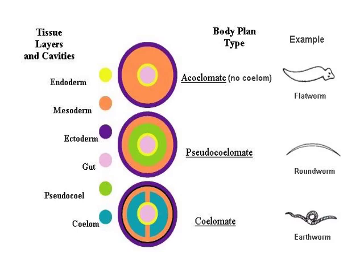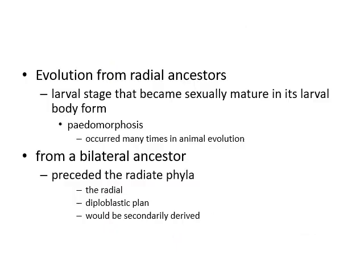Acoelomate animals have no coelom — for example, flatworms. Pseudocoelomate animals have a false body cavity — for example, roundworms. Coelomate animals have a true body cavity — for example, earthworms. Evolution from radial ancestors involves pedomorphosis, where larval stages become sexually mature in larval body form, occurring many times in evolutionary history to form a bilateral ancestor.